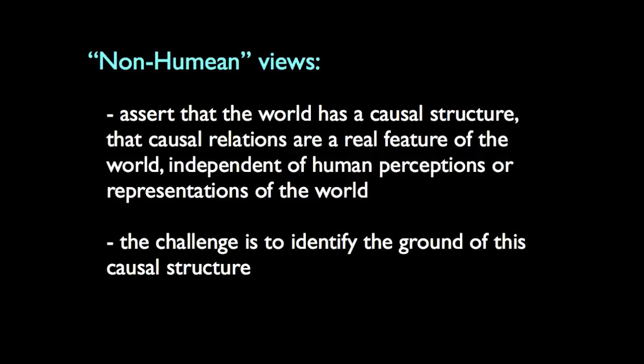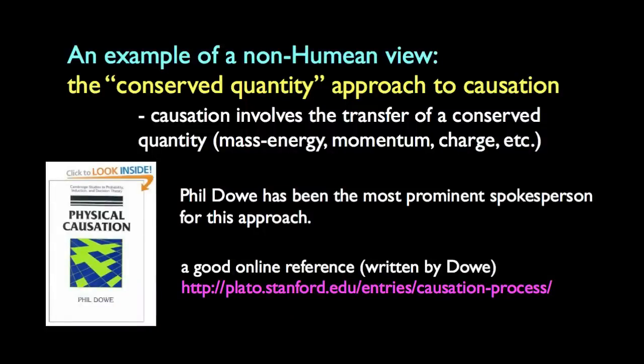Humean views want to keep the analysis of causal relations at the level of patterns and observable phenomena, shying away from talking about causes in metaphysical terms as part of the furniture of the world. Non-Humean approaches, on the other hand, embrace the metaphysical path — they want to identify causal relations with relations between properties or entities or processes in the world itself. When Theophage says that every physical cause involves a transfer of energy, he's implicitly working in one of these non-Humean traditions. There is a respectable school of thought called the conserved quantity theory of causation, which identifies every causal process with the exchange of a conserved quantity — energy, linear momentum, electrical charge, and so on.